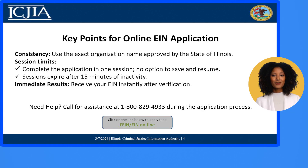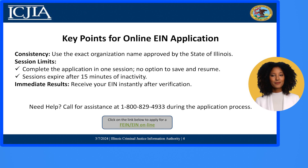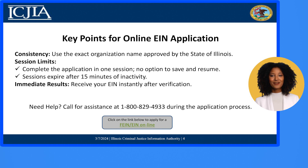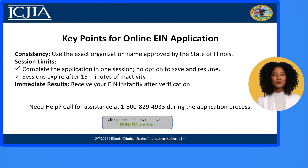When applying for an employer identification number online, ensure the organization name matches the one approved by the State of Illinois. Remember, the application must be completed in a single session, as there's no save and re-zoom option. You would need to stay active because sessions expire after 15 minutes of inactivity. After successful verification, you'll instantly receive your employer identification number. If you need help during the process, call 1-800-829-4933 for assistance.